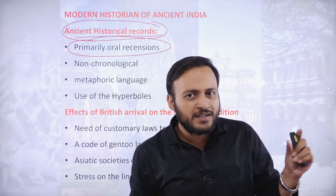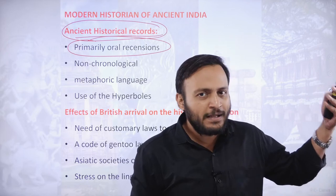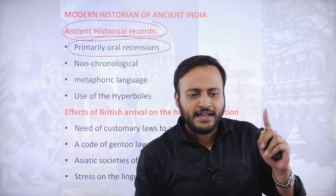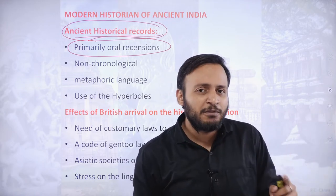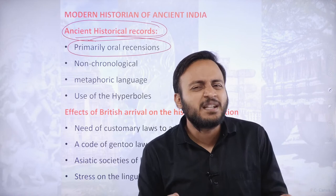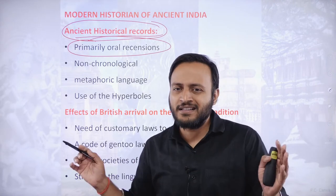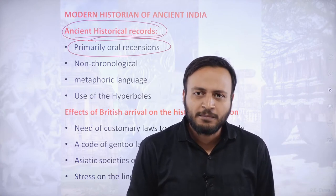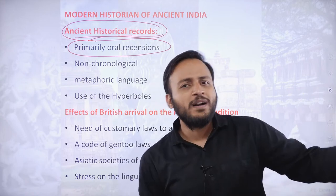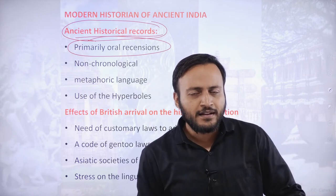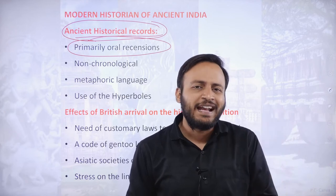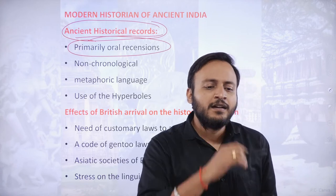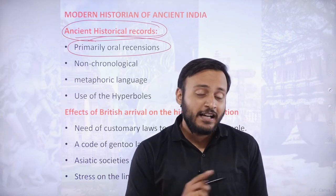In oral transmission, you lose some knowledge. Suppose I tell you a hundred things; your mind recalls ninety, and the person you tell retains only eighty. This is the type of loss of knowledge that occurs in oral recensions.